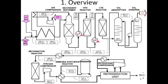Before I get into any details about specific sections in the production process, I would like to first give you an overview about the process through this very simplified diagram. There is only one section that is not included here in this diagram, which is the desulphurization step, where sulfur is removed from the process gas stream, but we'll get into the details of that later in future videos.